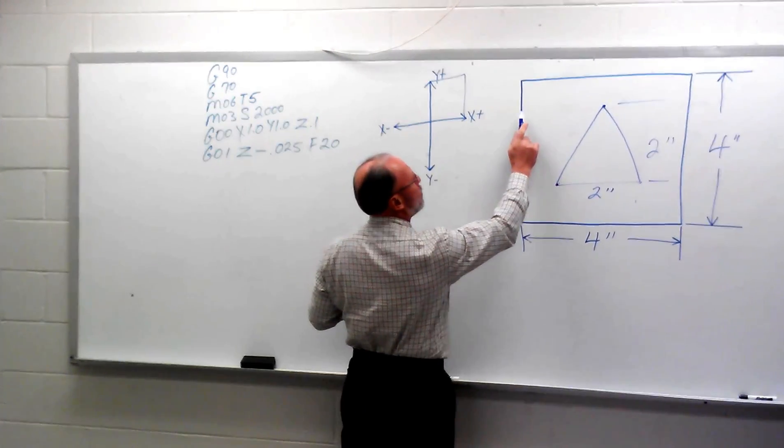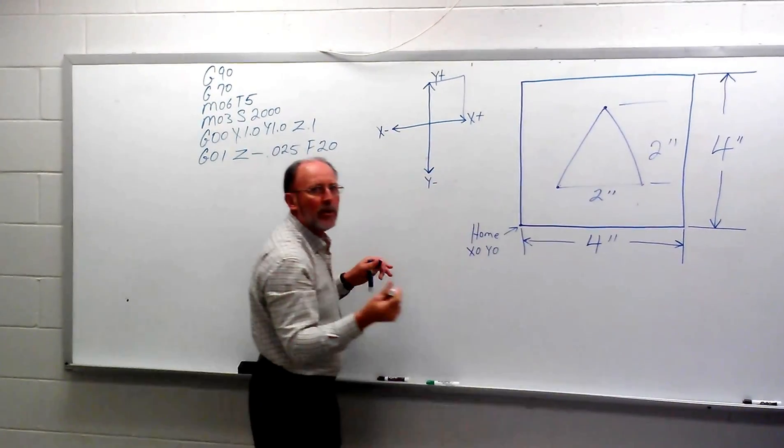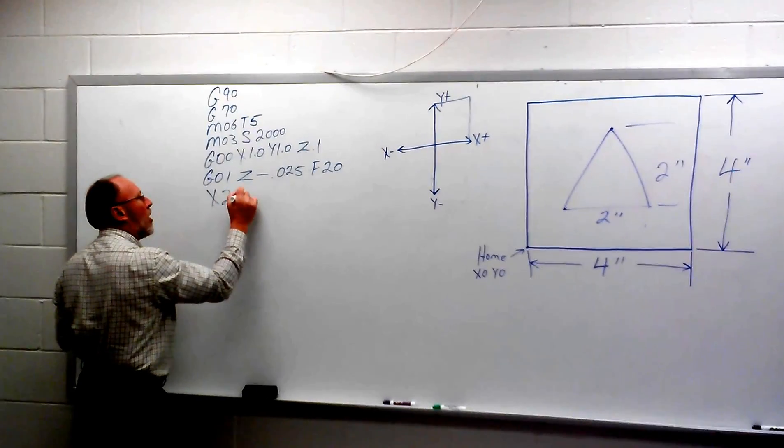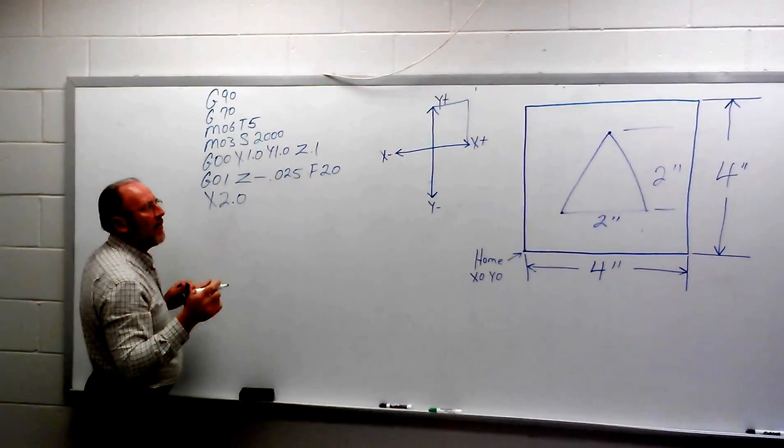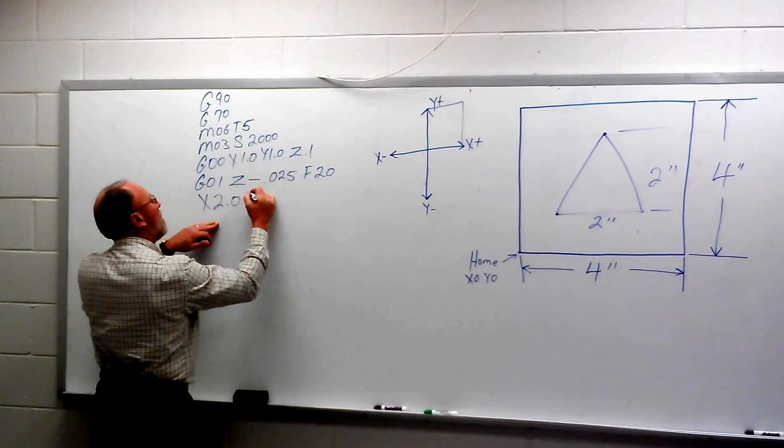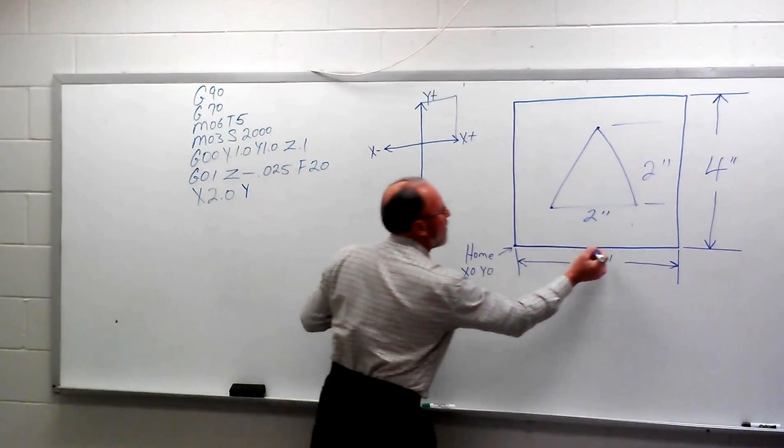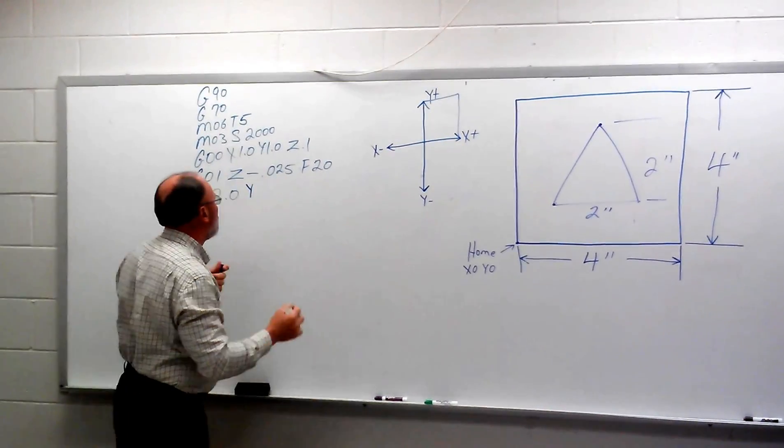So half of 4 is going to be 2, so I know from here to here, my X axis is going to be 2 inches. X, 2.0. Now we're going to give it a Y command on the same line because we want to move both axes simultaneously. And from here to here is 1 plus a total of 2, it's going to be 3 inches.